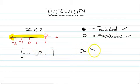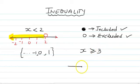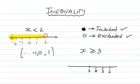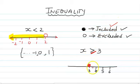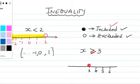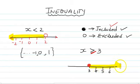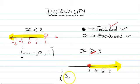If I say x greater than and equal to 3, you need to draw a number line and put here 3, then 4, 5, and 6. Greater than means you are going towards the right-hand side. The question is whether 3 is included or not. You can see there is an equal sign, so 3 is included. Included means we make a dark circle here and go towards the right-hand side, up to infinite. So you write 3, then 4, 5, 6, and so on.